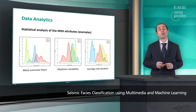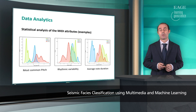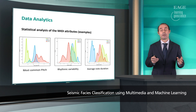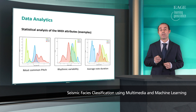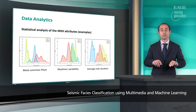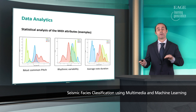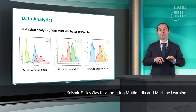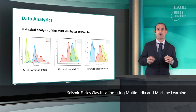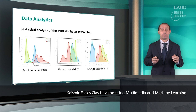To show the sensitivity of these MIDI features, here you can see three statistical distributions — just three examples among many — of three different MIDI features: the most common pitch, rhythmic variability, and average note duration. Using just these three attributes, we are able to separate and distinguish different types of seismic facies: clays, high gas saturated sands, and low gas saturated sands, represented by the green, blue, and red curves respectively. They are properly separated depending on the features used, and when we use all the features together — about 100 MIDI features — the classification is much better.